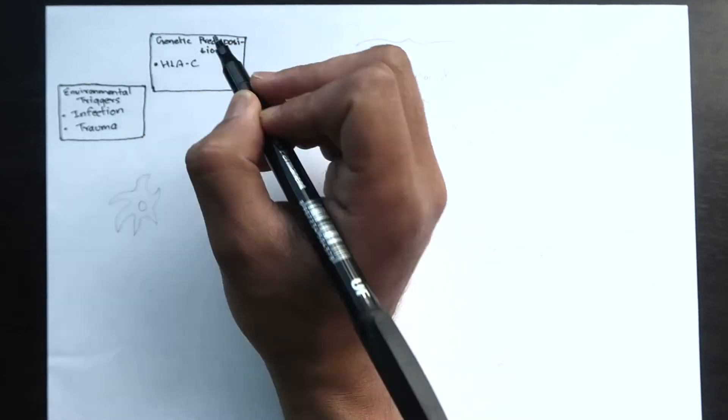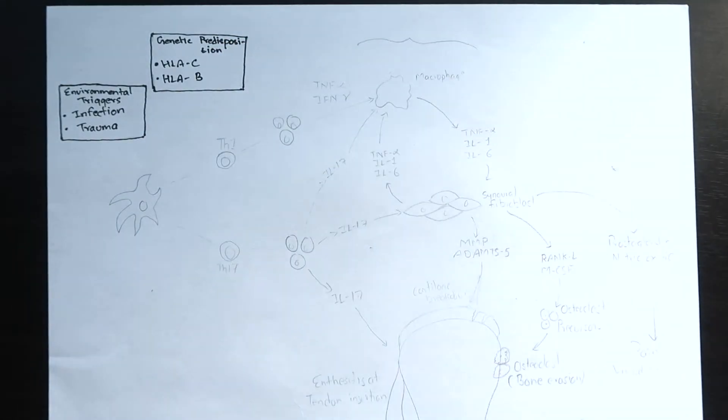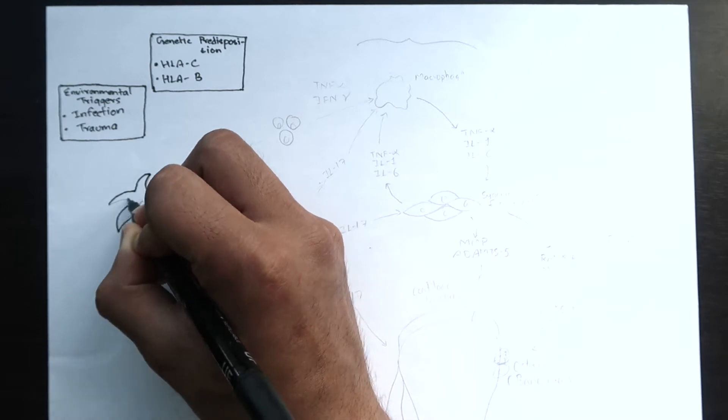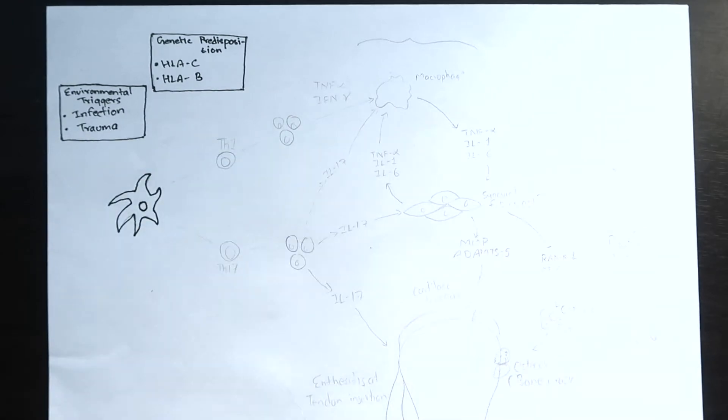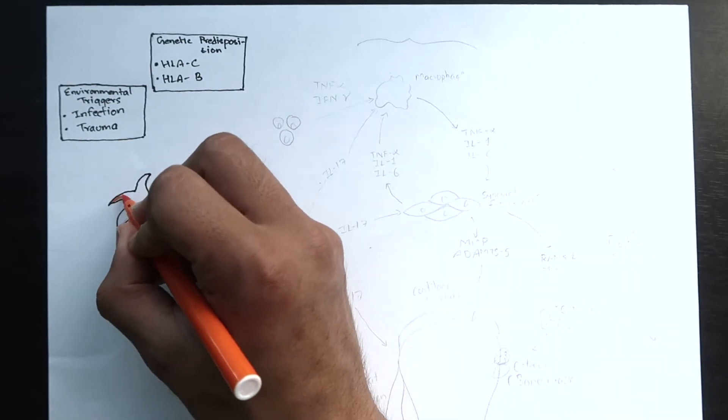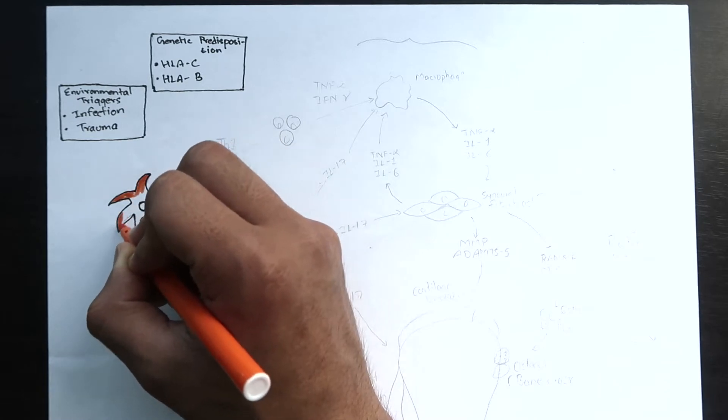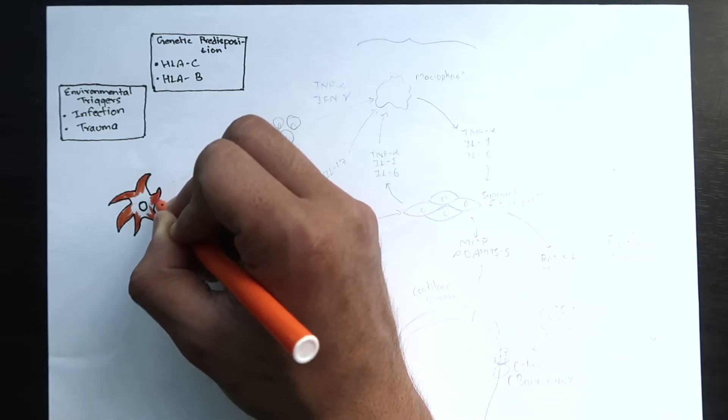Now let's discuss the pathophysiology of psoriatic arthritis. Environmental triggers such as infection or trauma can trigger the disease in genetically susceptible individuals. HLAB and HLAC genes are the strongest genetic risk factors.